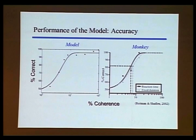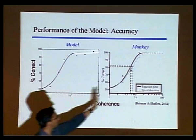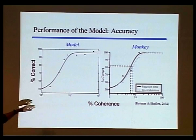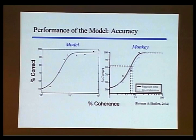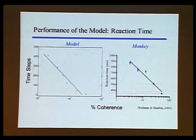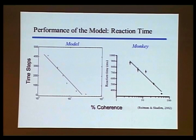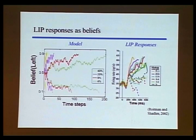Comparing to monkey data: the percentage correct as a function of coherence shows the monkey at nearly 100% for high coherence and near 50% chance at low coherence. The model shows something similar, though with random action selection it doesn't quite reach 100% until fully 100% coherent stimulus. Similarly, reaction time decreases as coherence increases — more coherence gives less reaction time. The LIP area responses resemble the belief in a direction of motion: for preferred direction, rapidly rising firing rate at higher coherences mirrors the rapid rise in belief; for opposite direction, the decrease in firing mirrors decreasing belief.